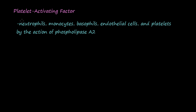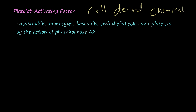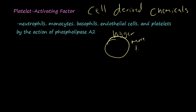We're going to continue our discussion on the cell-derived chemicals of inflammation. We've talked about histamine and serotonin — they're considered vasoactive substances that cause vasodilation, making the capillaries bigger so more blood flows. They also cause the capillaries to become more porous, which is vascular permeability, meaning they have more holes so more stuff, including leukocytes, can leak out to get where they need to go.